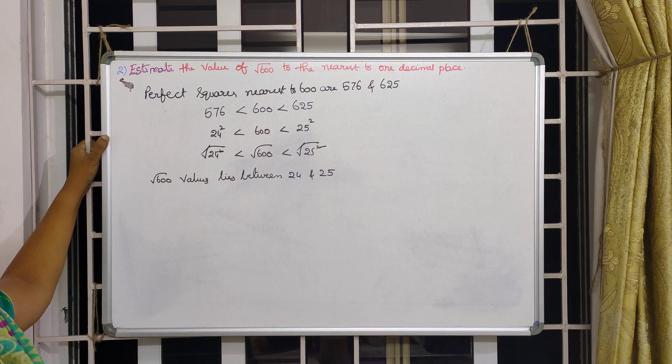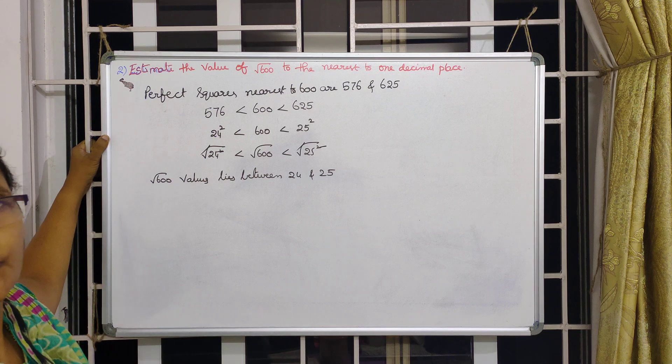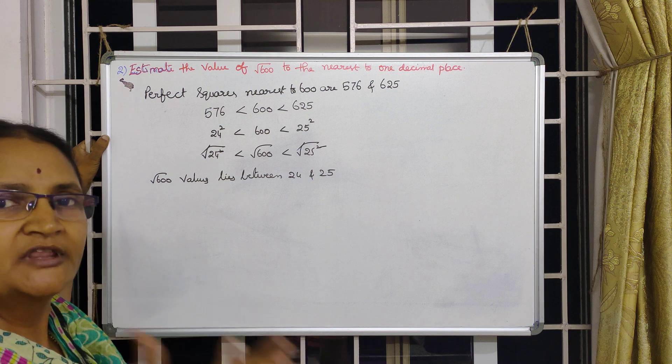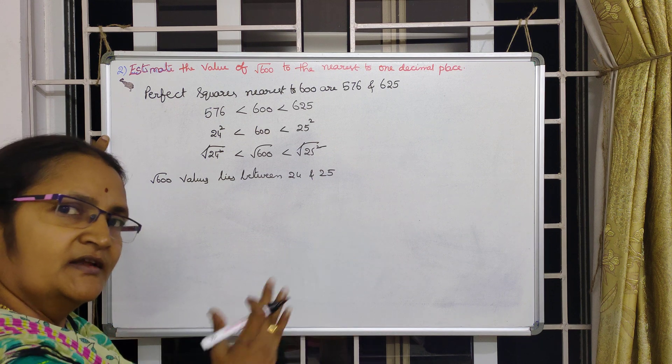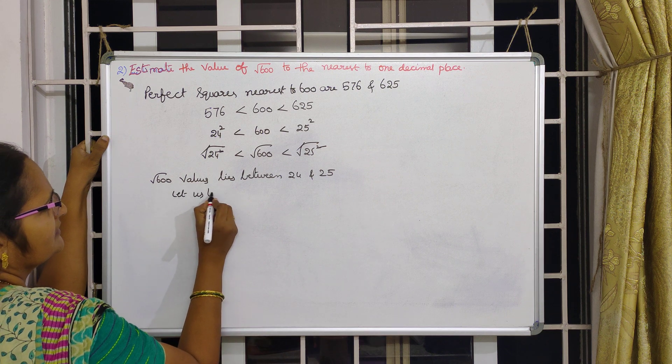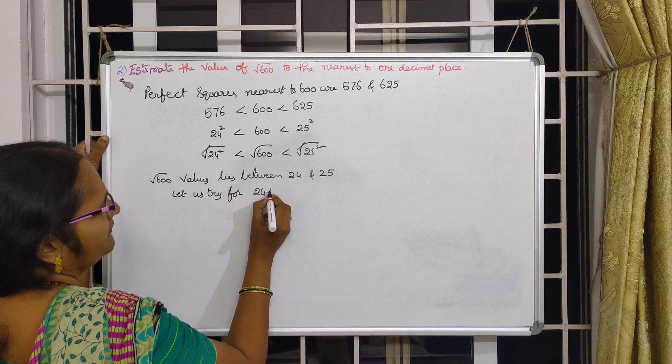Root 600 value lies between 24 and 25. In between 24 and 25, maybe 24.1, 24.2, 24.3, whatever the value is. We are going halfway first. Then based on the result we'll go either this side or that side. So let us try for 24.5 I am taking.